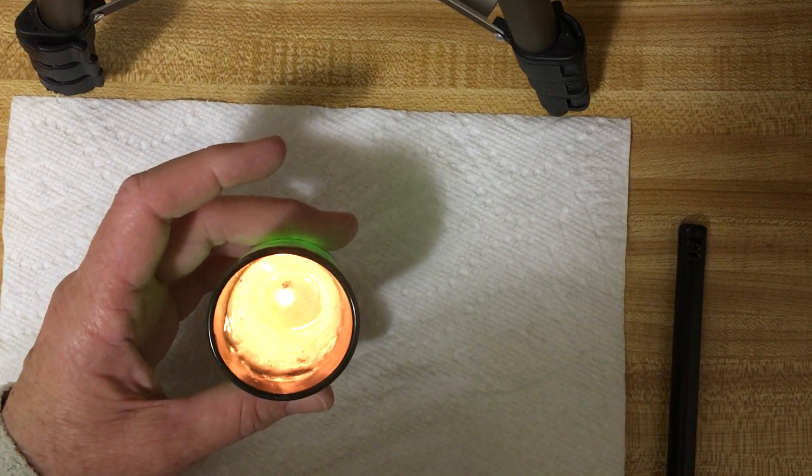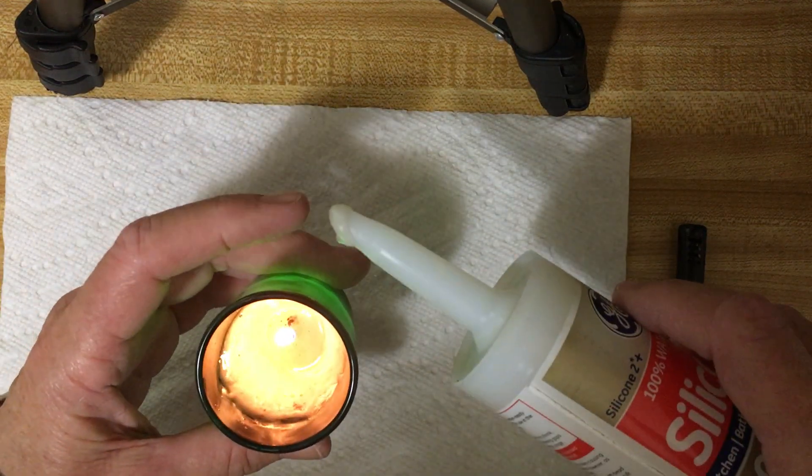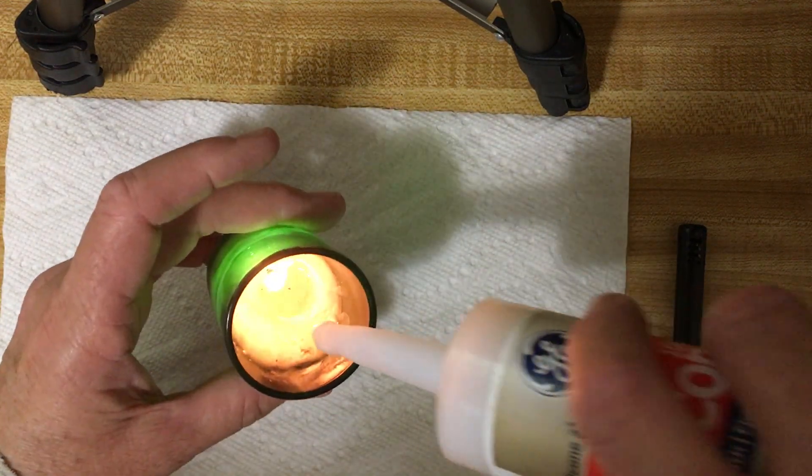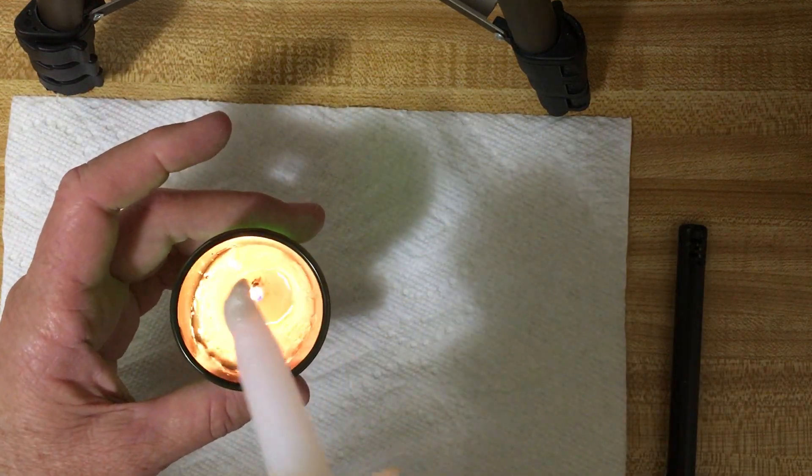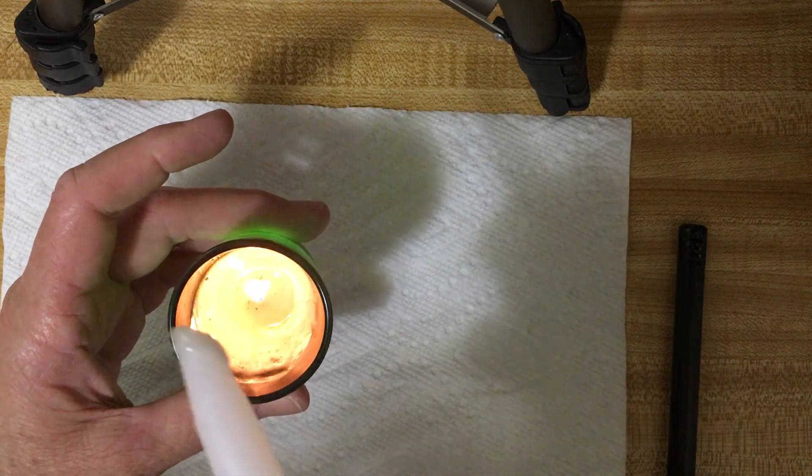To speed up the process, just blow on the tip of the caulking to get it to harden up and dry a little faster - solidify, if you will.